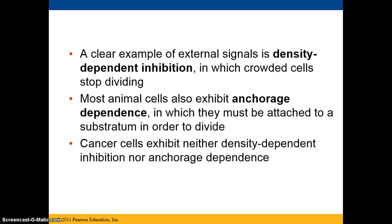A clear example of external signals is density-dependent inhibition. If cells on a petri dish form a single layer, they enter G0 and stop dividing — there's no more space. Many animal cells also exhibit anchorage dependence, meaning they must be anchored to some kind of substrate in order to divide. If not anchored to that material, the cells will not divide.